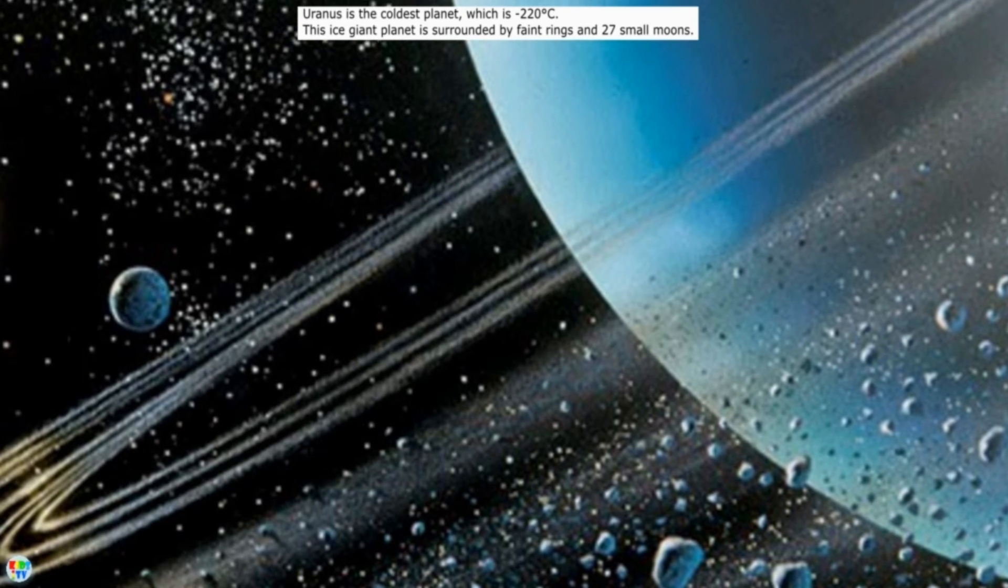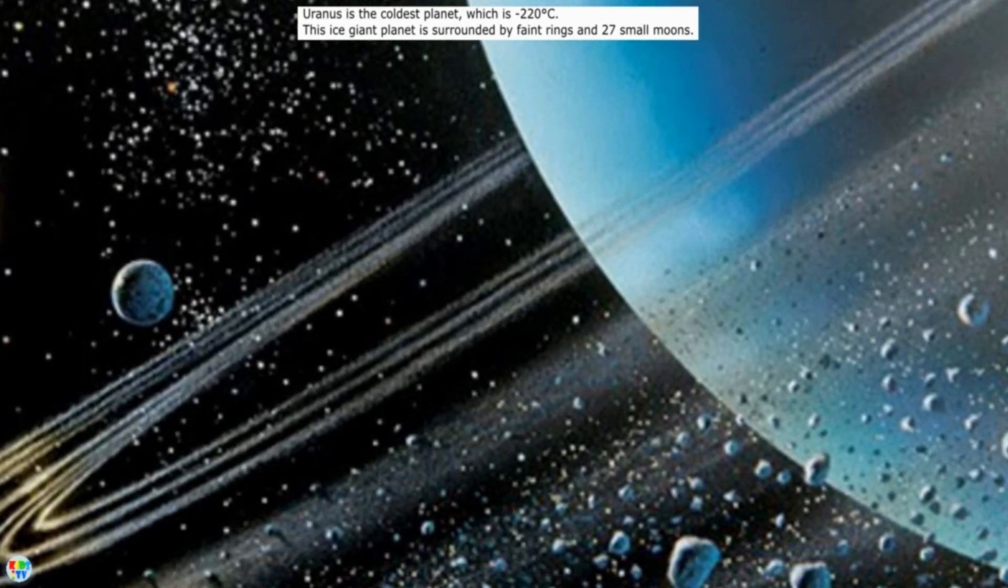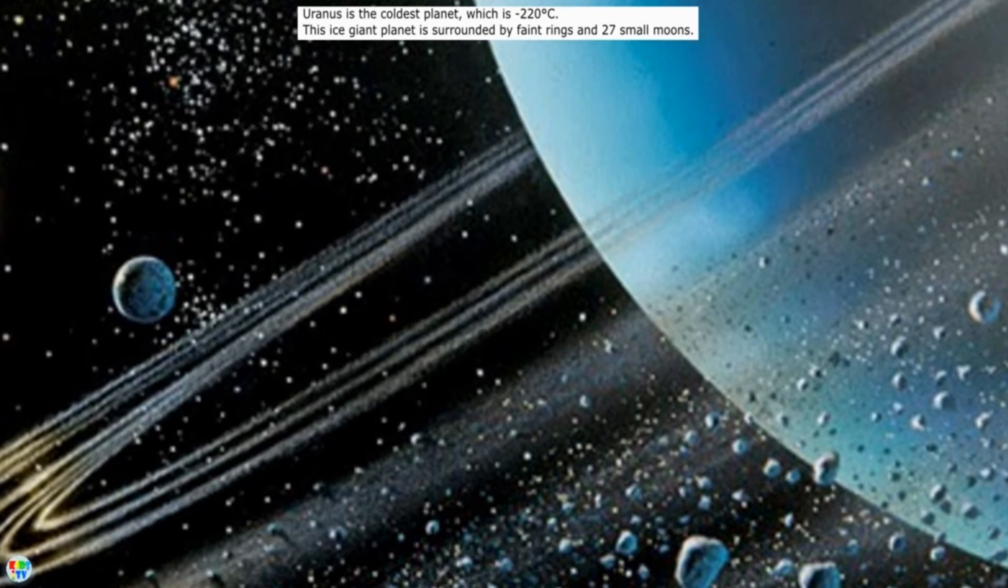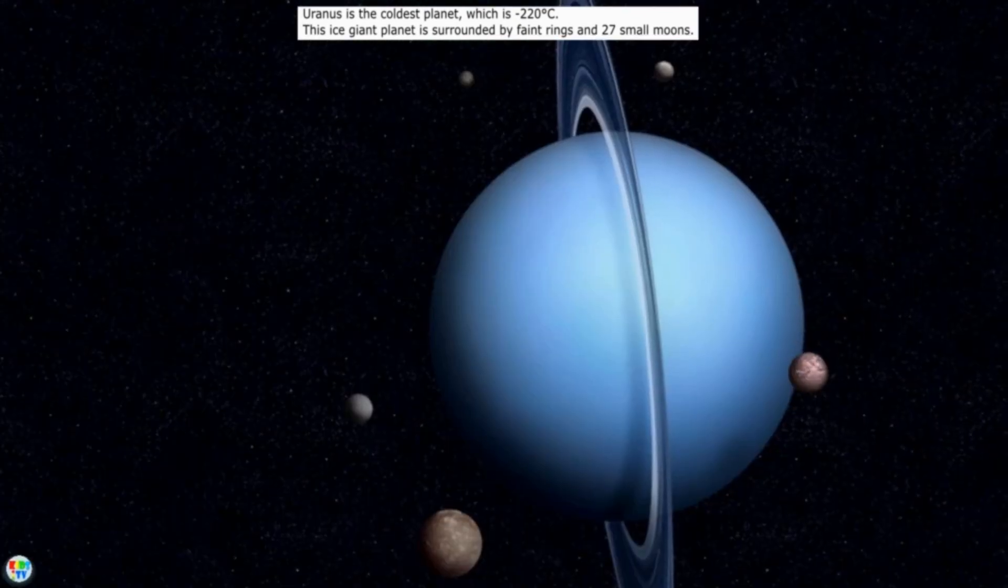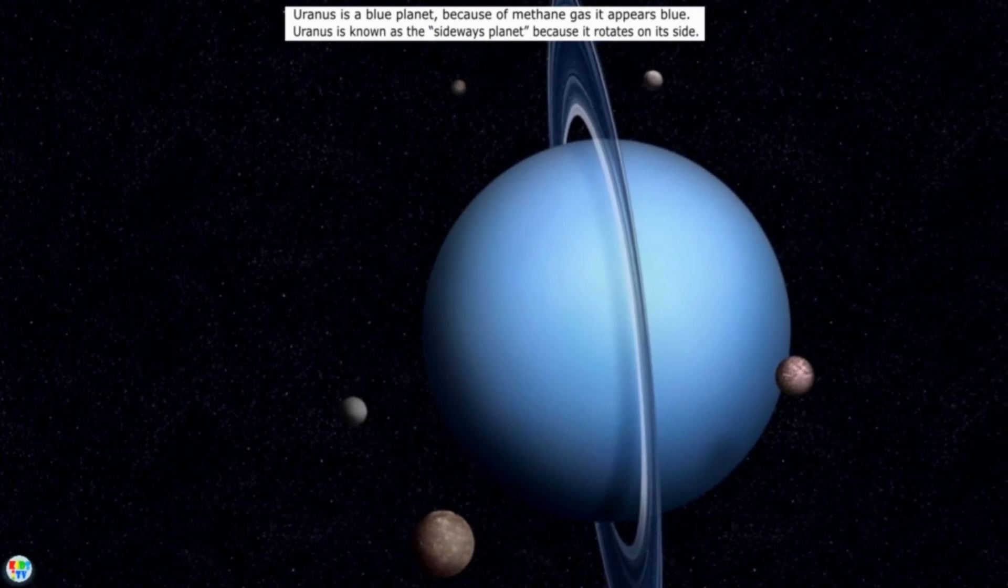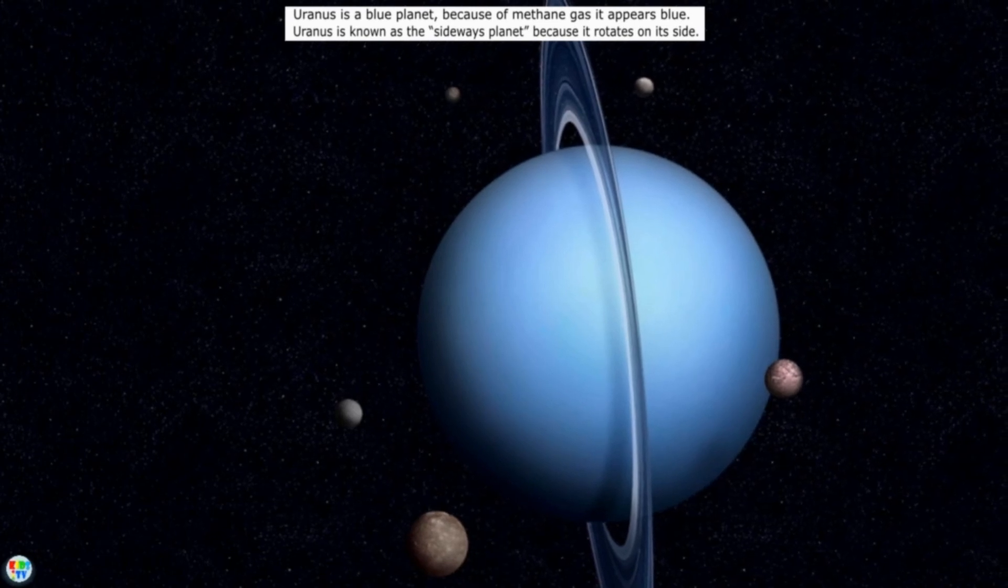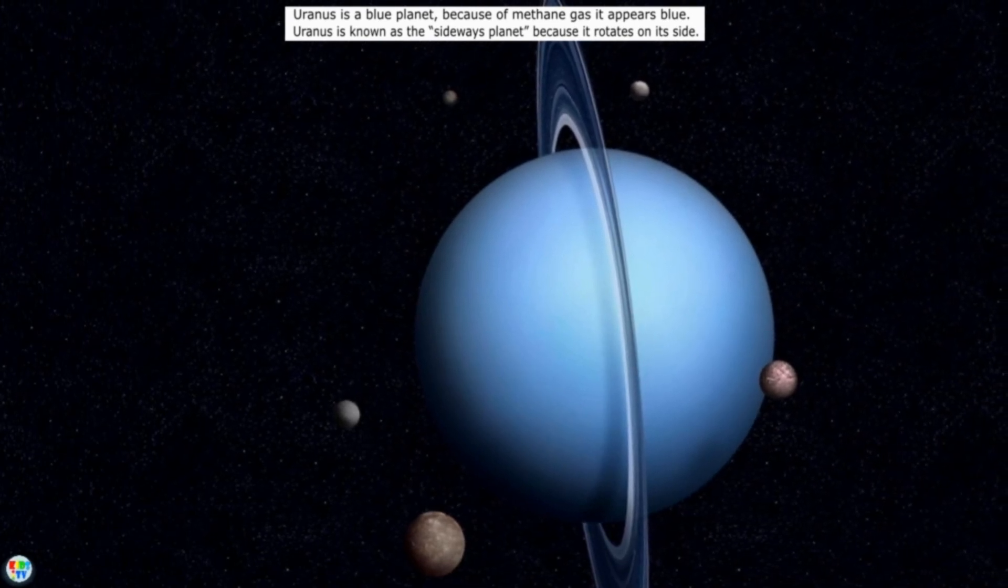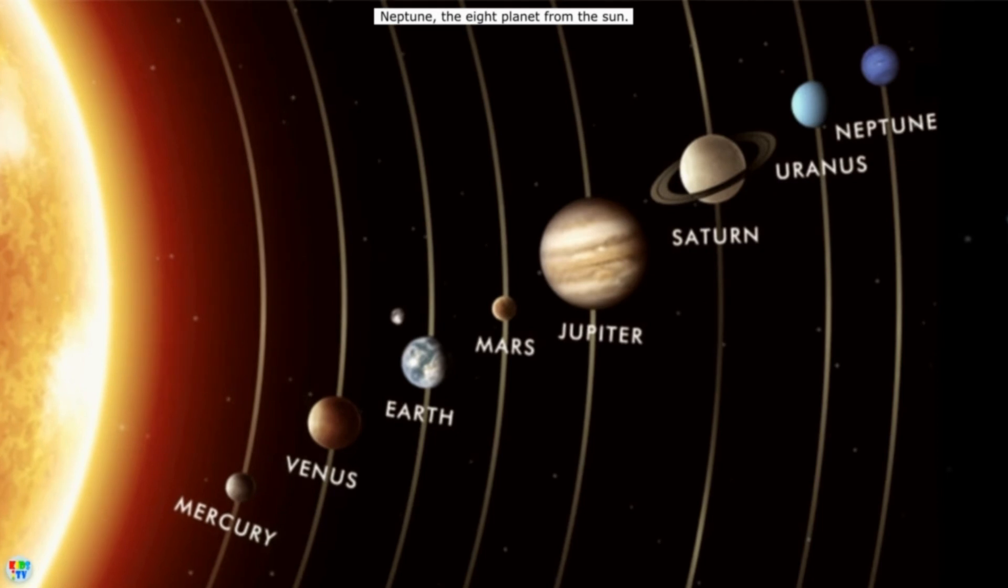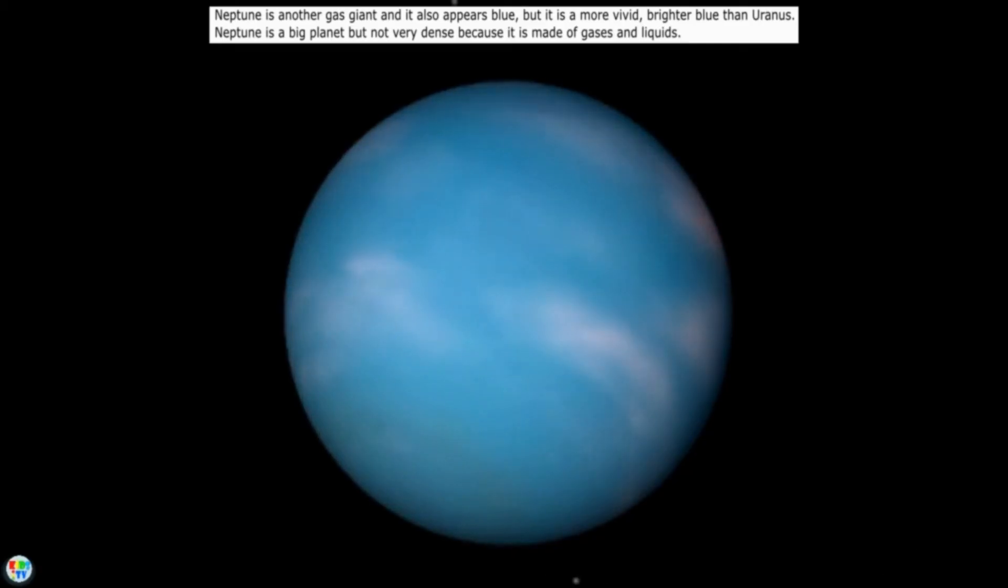Uranus is the coldest planet at minus 220 degrees Celsius. This ice giant planet is surrounded by faint rings and 27 small moons. Uranus is a blue planet because methane gas appears blue. Uranus is known as the sideways planet because it rotates on its side.